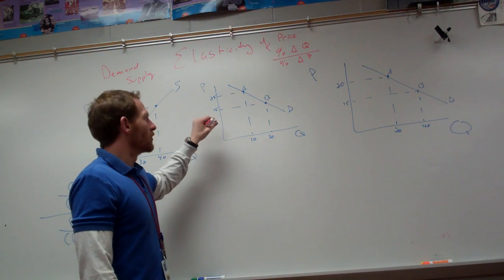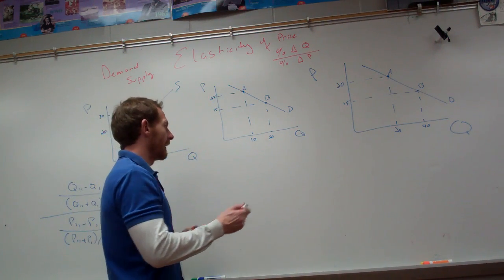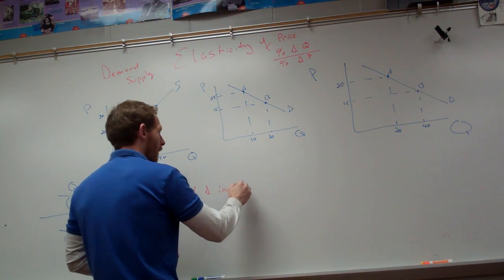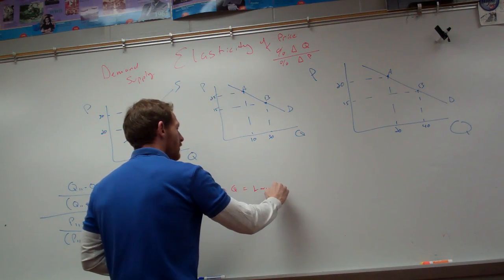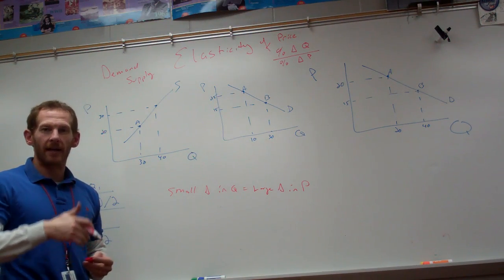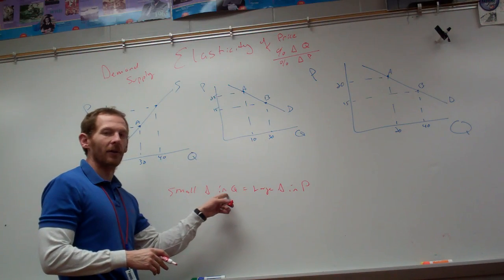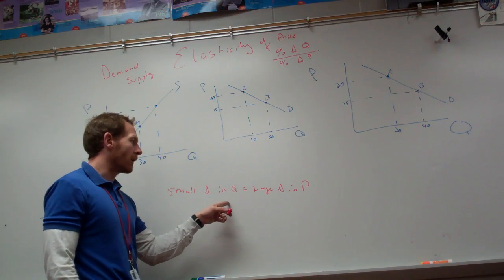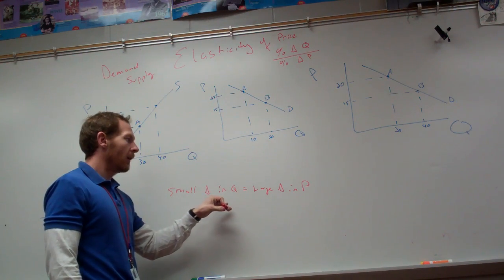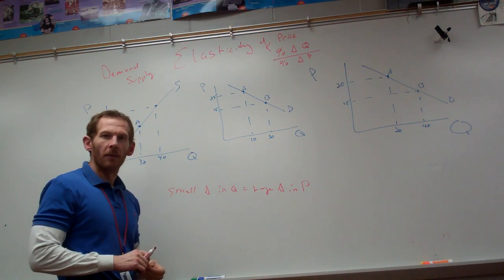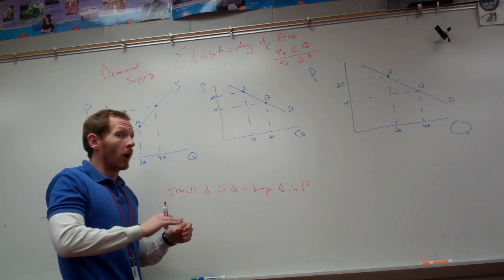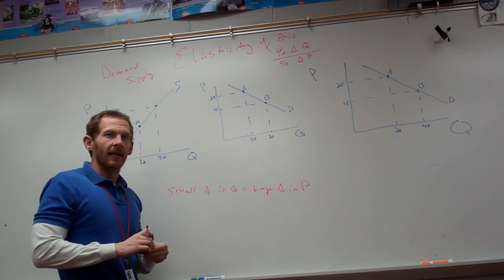Companies figure out just how elastic something is. If there is a small change in quantity with a large change in price, then a company knows that it can hike up prices and people will continue to buy the good. If there's a large change in quantity based on a small change in price, companies know if they just move their price a little bit, people are either going to buy a bunch of it if they lower their price, or hardly any of it at all if they increase their price. It tells companies how to price stuff.